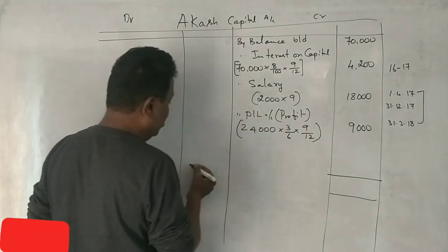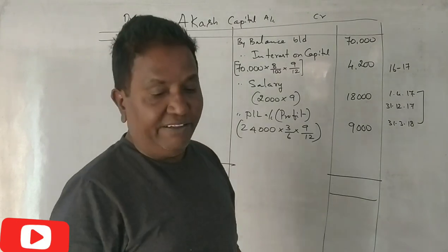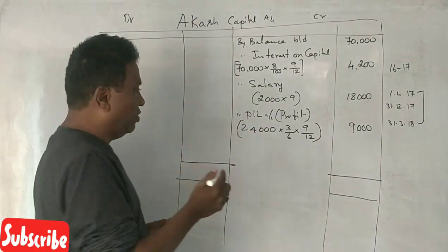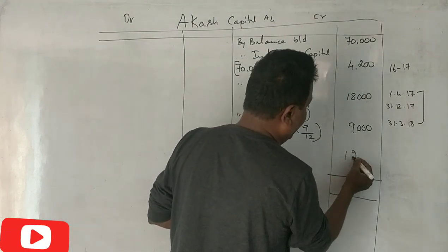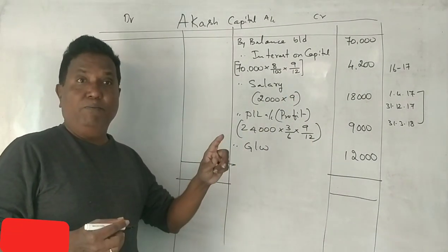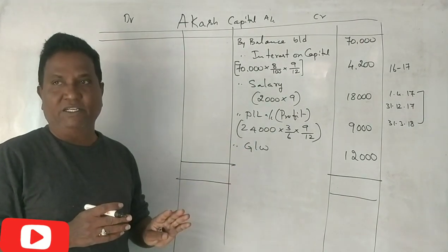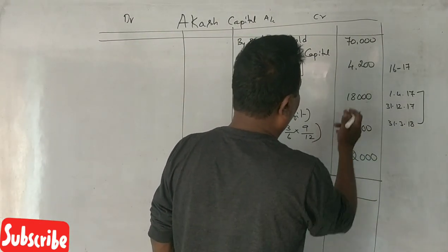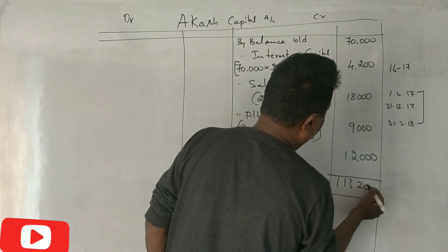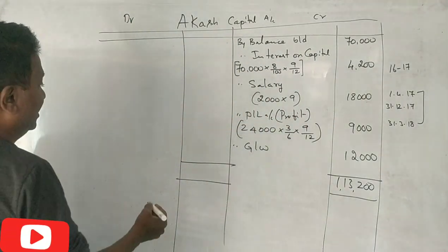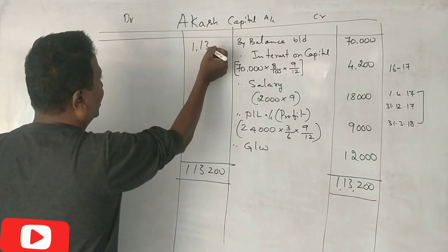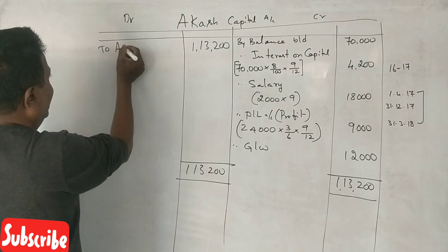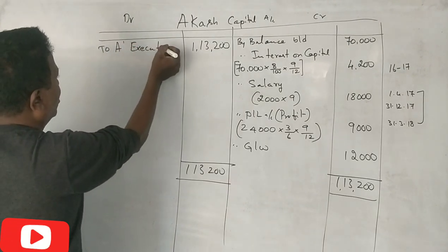On the credit side, his share of goodwill of 12,000 is recorded. The goodwill share is credited to his capital account. The total on the credit side comes to 1,13,200, and on that date the account is transferred.